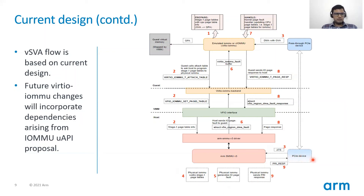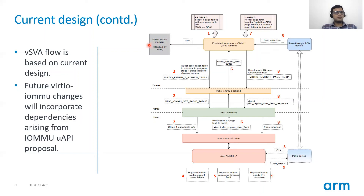Once this page fault is handled, the PCI pass-through device running in the guest can again initiate an ATS request and the DMA with the guest virtual address will successfully complete.